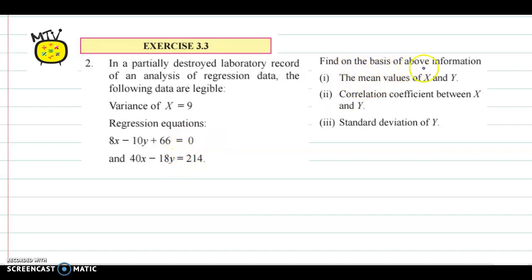Find, on the basis of the above information, the mean values of x and y, the correlation coefficient between x and y, and standard deviation of y. So these are two equations and the variance of x, and these are the information we need to find.